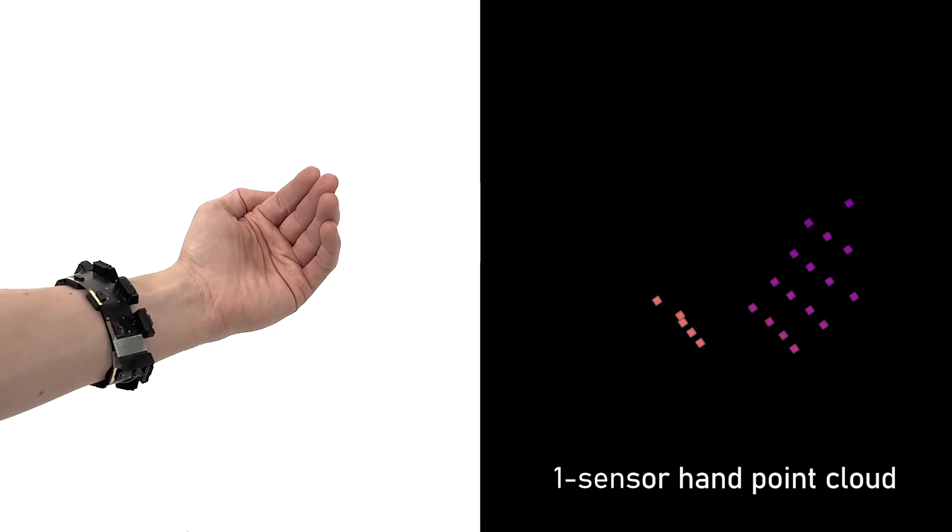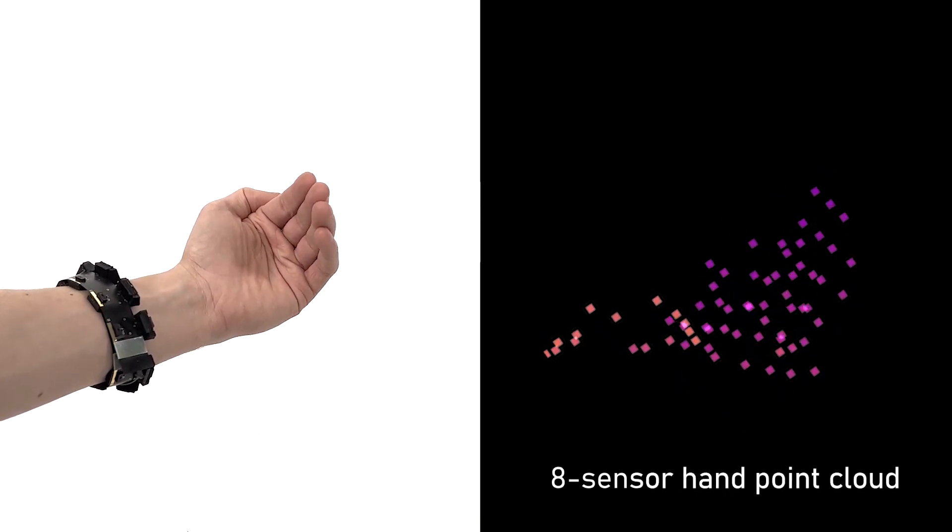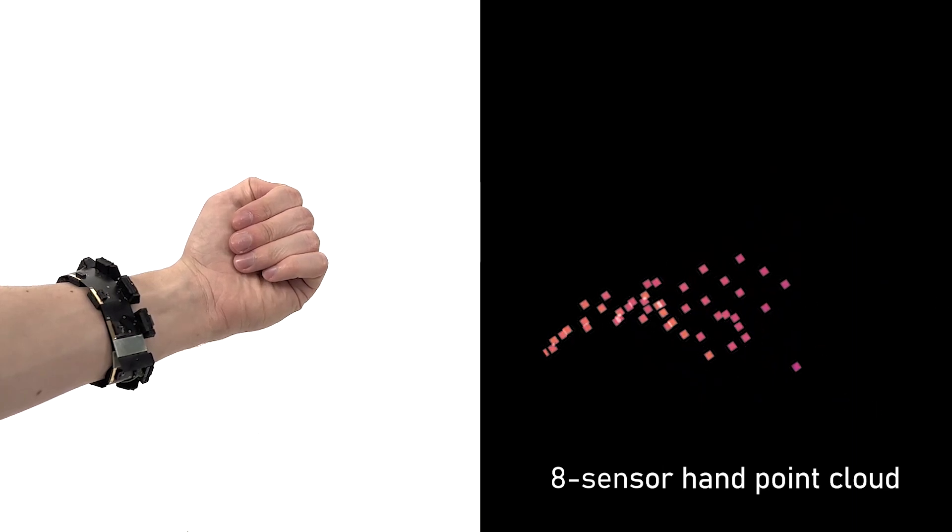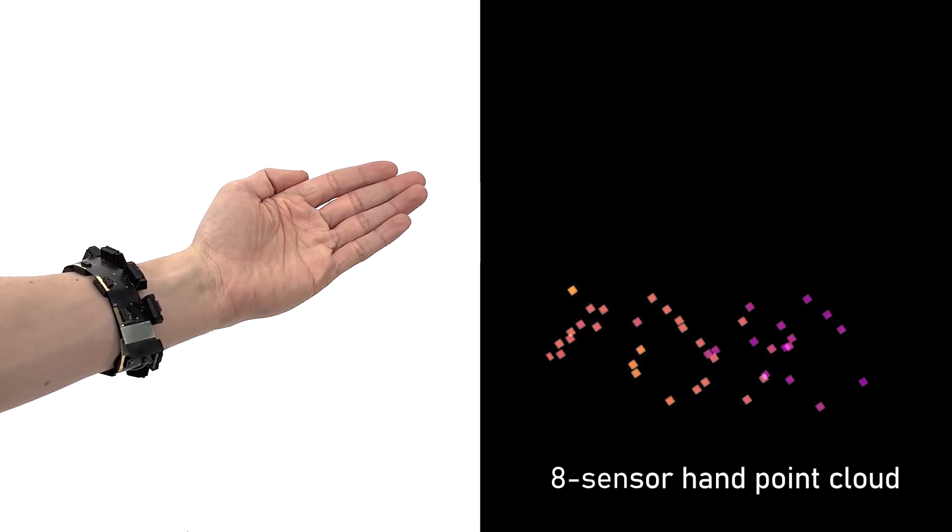Each depth sensor captures an 8x8 depth image, which can be rendered as a 3D point cloud. We combine the different sensor views to build a unified point cloud, able to capture descriptive geometry, in this case, hand pose.